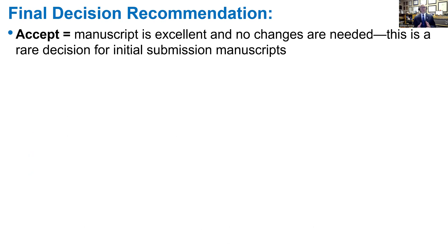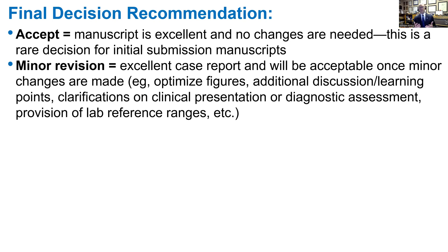When it comes to your final decision, you have several options. The first is to accept the manuscript — this means it's excellent and no changes are needed. This would be a very rare decision for an initial review; I might give an accept on one article per year. Typically the accept decision would be on a manuscript sent back after a major revision. Minor revision means this is an excellent case report and it will be acceptable once minor changes are made — for example, optimizing the figures, additional discussion or learning points, clarifications on clinical presentation or diagnostic assessment, or revision of lab reference ranges.